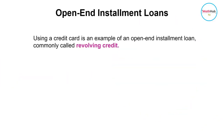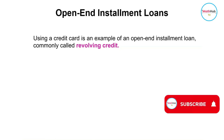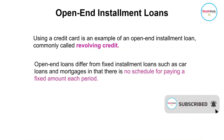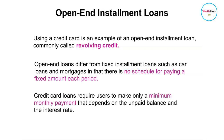Using a credit card is an example of an open-end installment loan, also commonly called a revolving credit. Open-end loans differ from fixed installment loans such as car loans and mortgages — there is no schedule for paying a fixed amount each period.